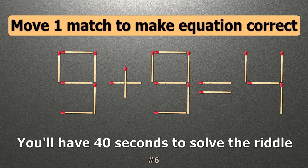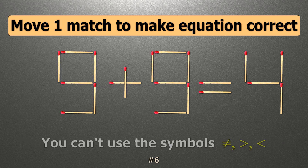We have the equality 9 plus 9 equals 4. Our equality is wrong. We need to move one match to make our equality correct.